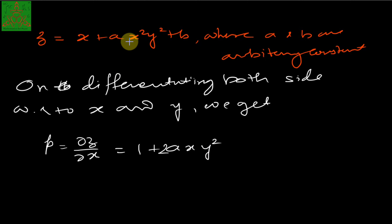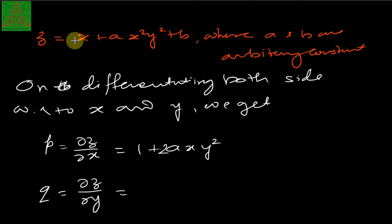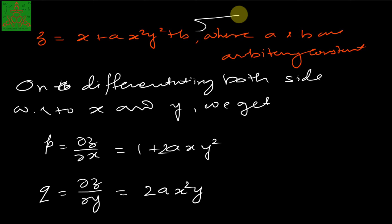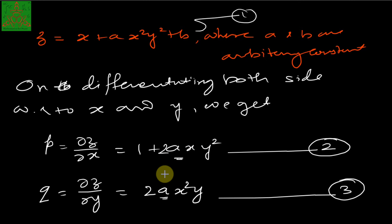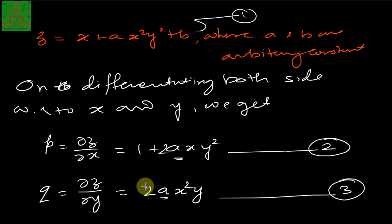The derivative of x is 1, the derivative of x² is 2x, and the derivative of b is 0. And q = ∂z/∂y gives 2ax²y. Calling these equations 1, 2, and 3, we have to eliminate a and b from these three equations. From equation 3, we get a = q / (2x²y).